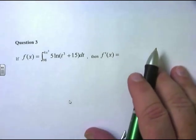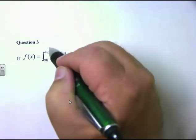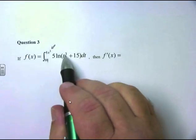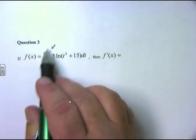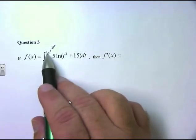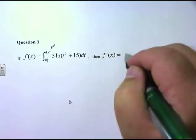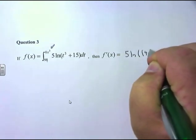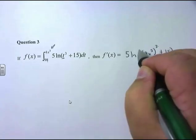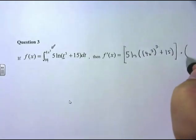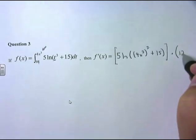This next one is a little different. f(x) is the integral from 98 to 4x³ of 5·ln(t³+15)dt, and we need to take the derivative. The derivative of an integral cancels, so in place of t I plug in 4x³. But this is not just x — it's a function — so I have to use the chain rule. The answer is 5·ln((4x³)³+15) times the derivative of the inside, which is the derivative of 4x³ = 12x².